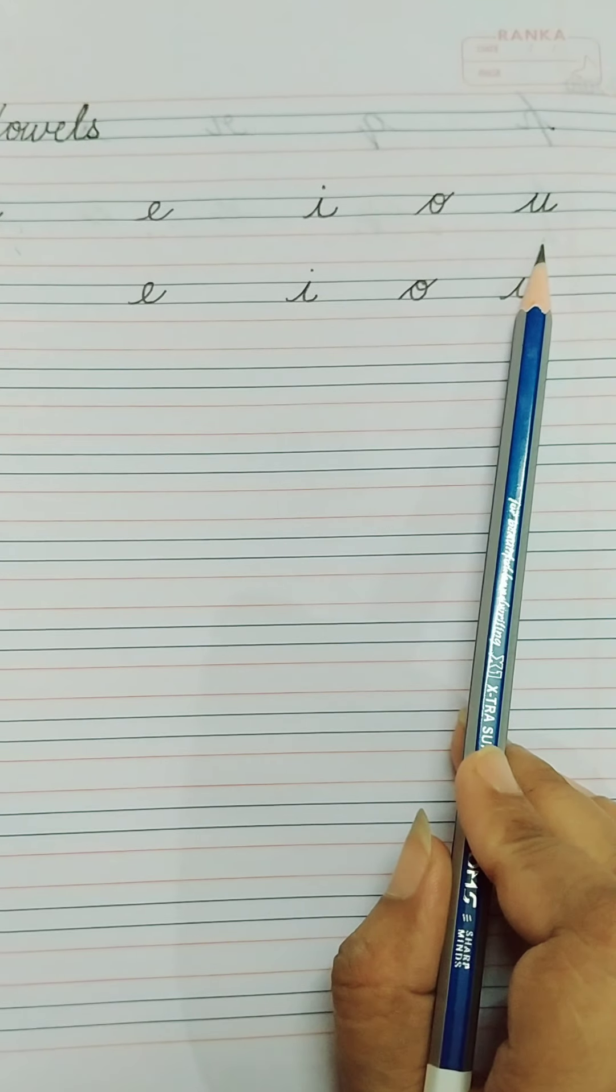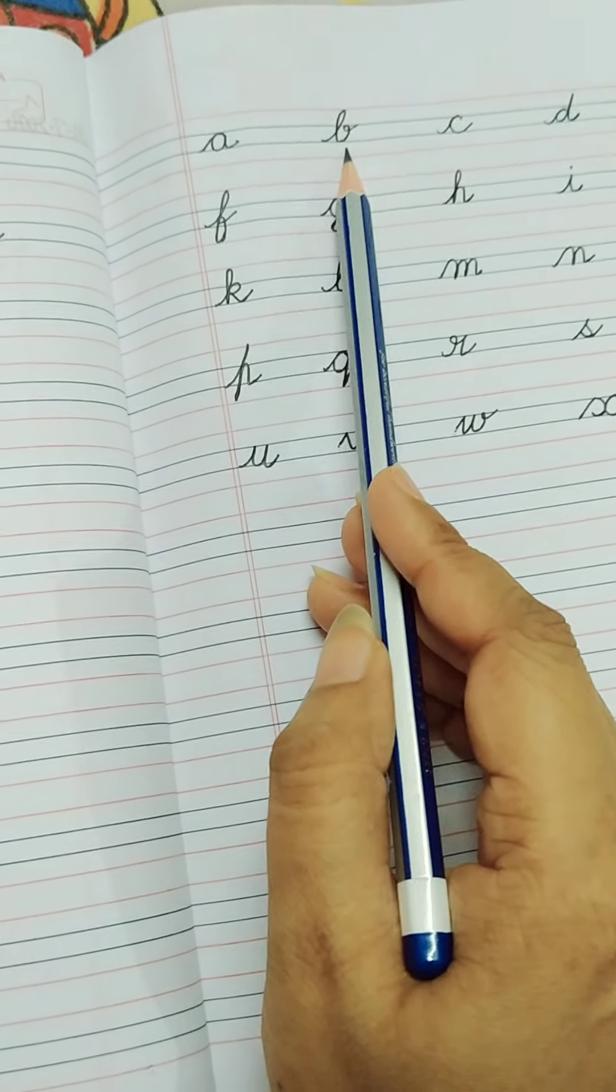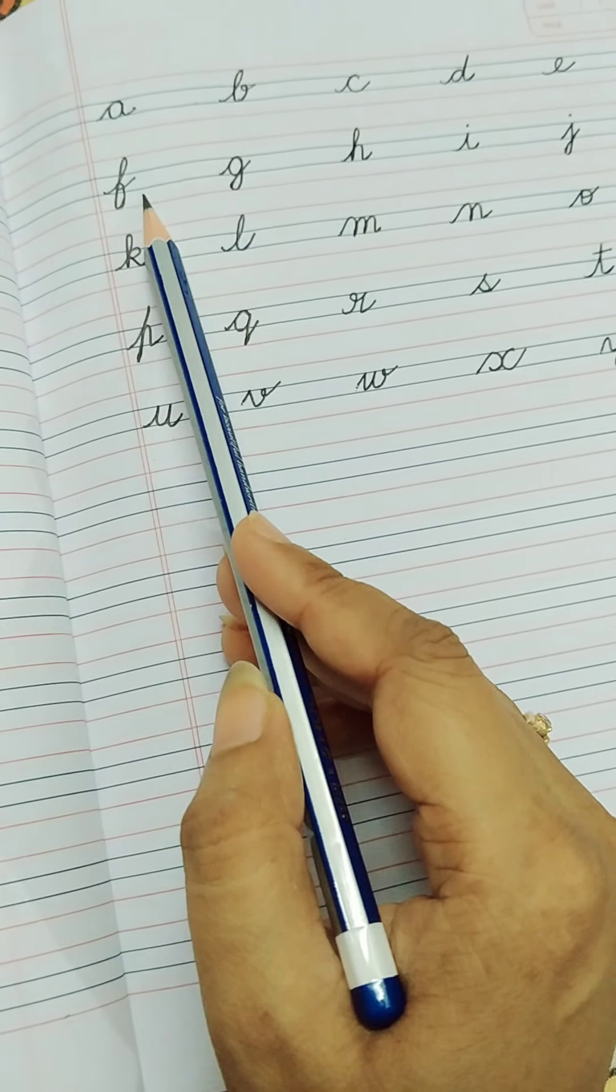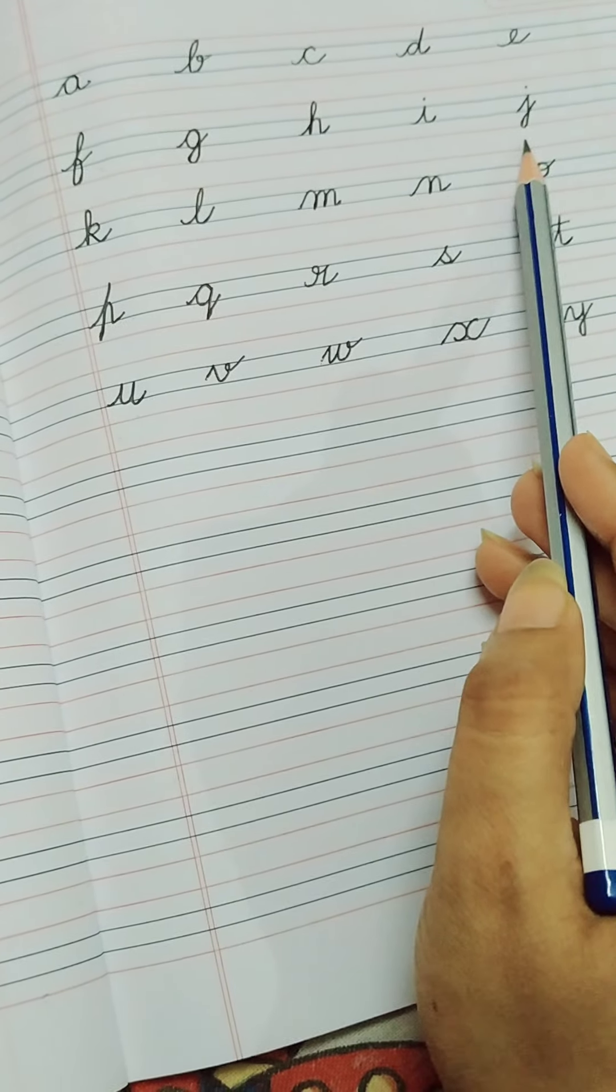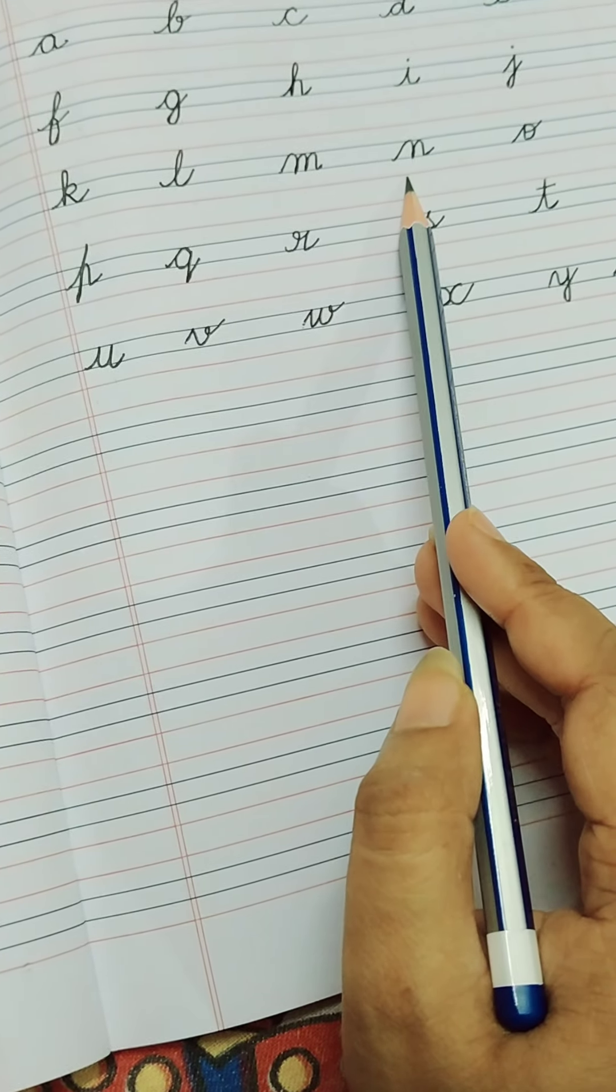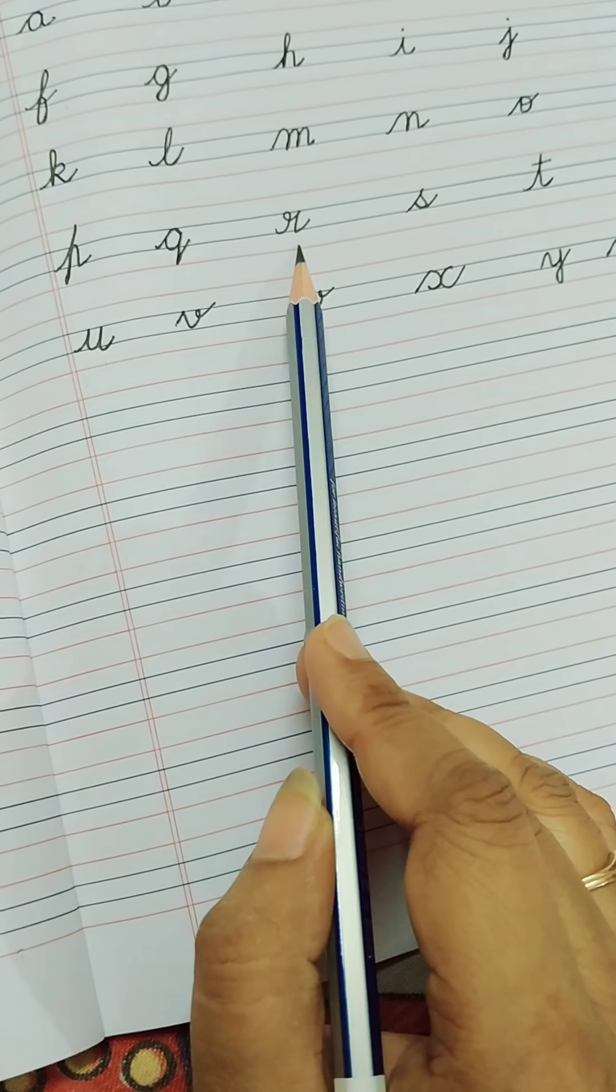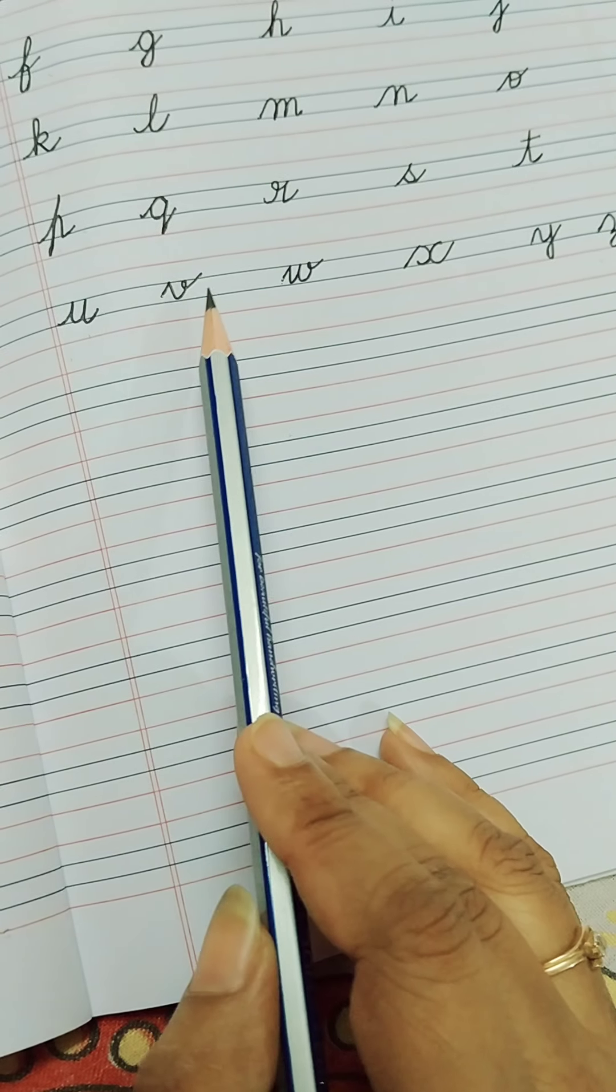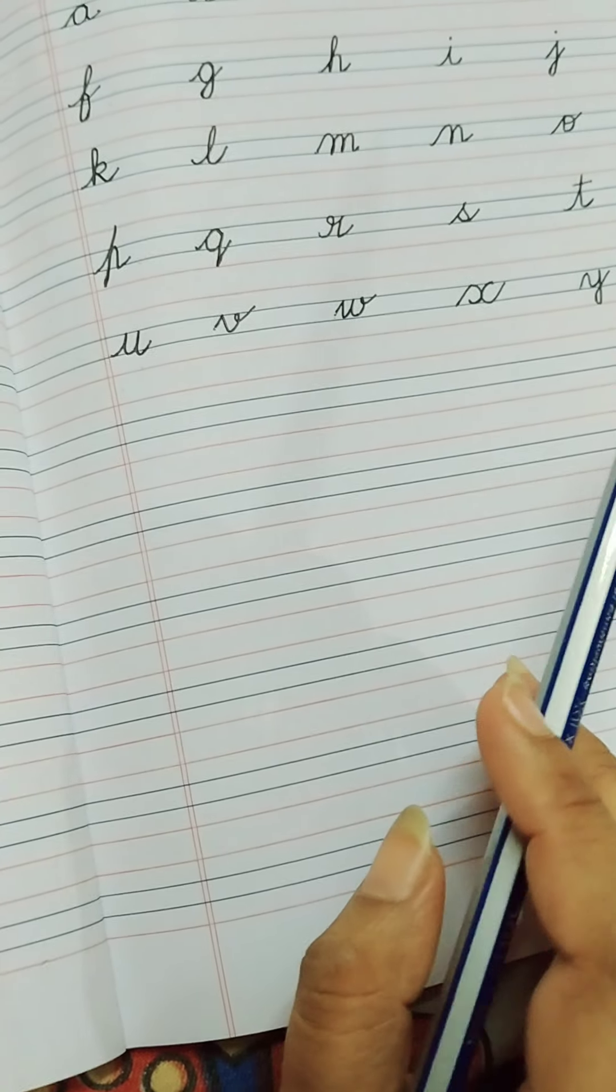In English, there are 26 letters. A, B, C, D, E, F, G, H, I, J, K, L, M, N, O, P, Q, R, S, T, U, V, W, X, Y, and Z.